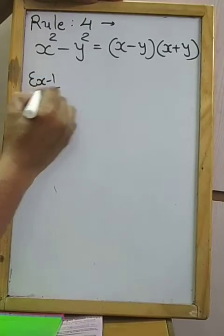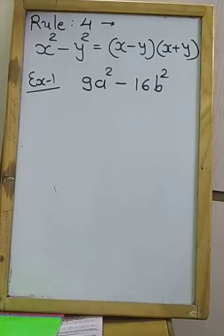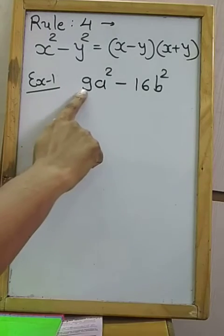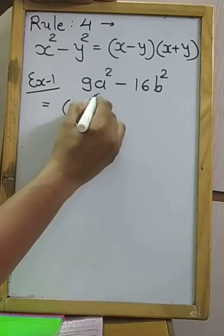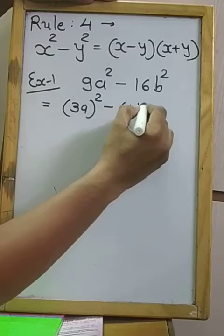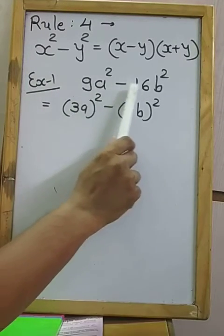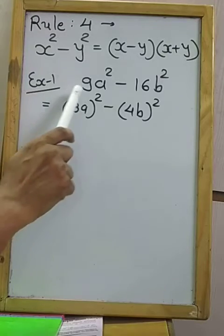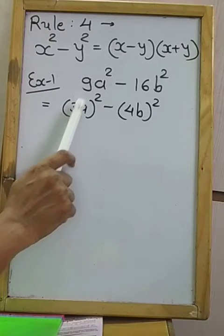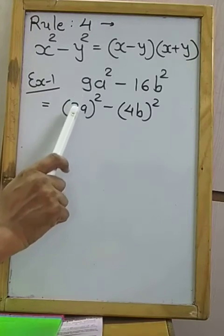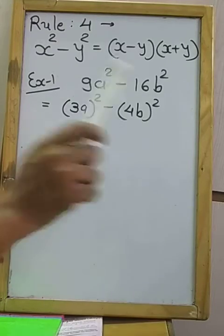Let's take an example: 9A² − 16B². Both 9 and 16 are perfect squares. Many students make a mistake here and write (9A − 16B)(9A + 16B) — that is wrong. The entire bracket must be a perfect square. 9 is the square of 3, so write (3A)² minus (4B)², both sides are squares with minus in between.